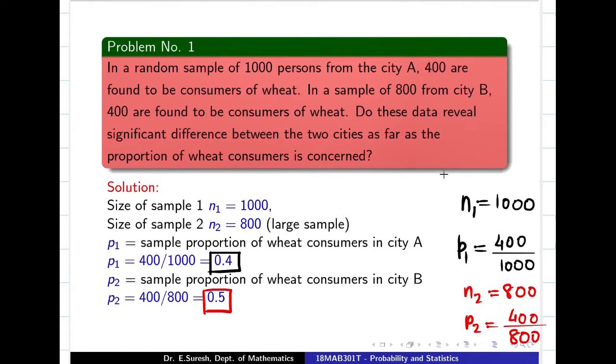So now we have N1, P1, N2, P2. Let us see the question again. Does the data reveal the significant difference between two cities? So they are asking, this data reveals there is a significant difference between two cities as per the proportion of wheat consumers is concerned. So it is obvious, H0 always accept what? P1 and P2, there is no difference between two cities. So whenever you see the word difference, so this is going to be two-tailed test. We are going to say whether they are equal or not equal. So problem over.